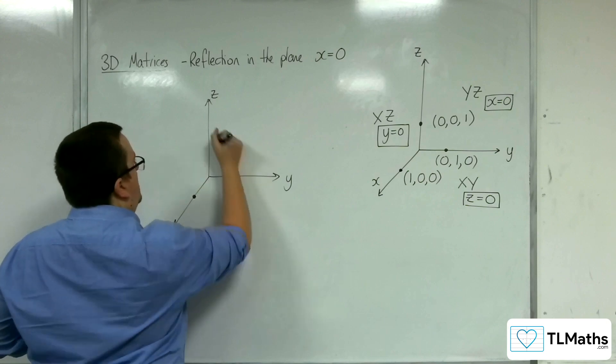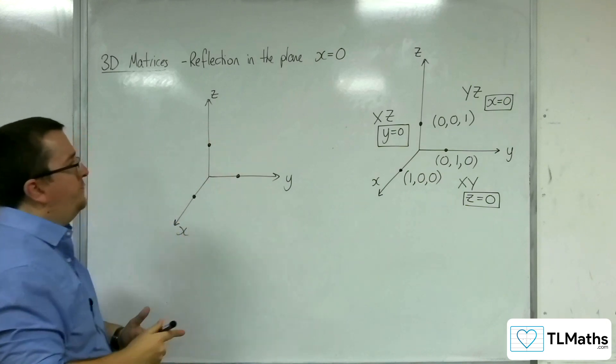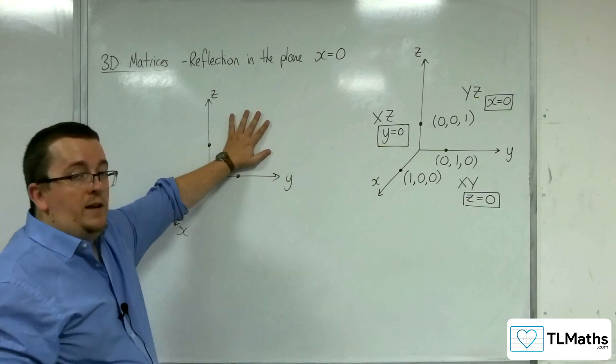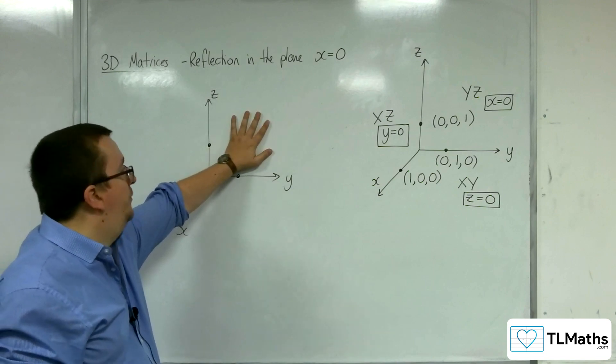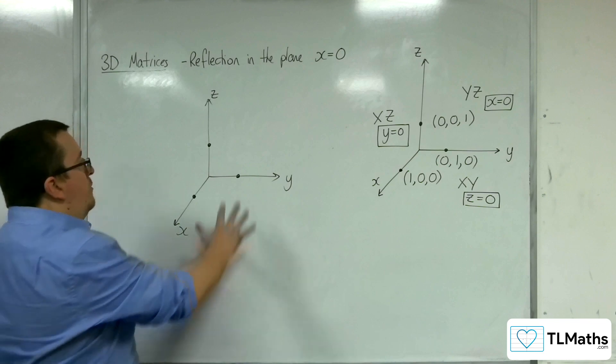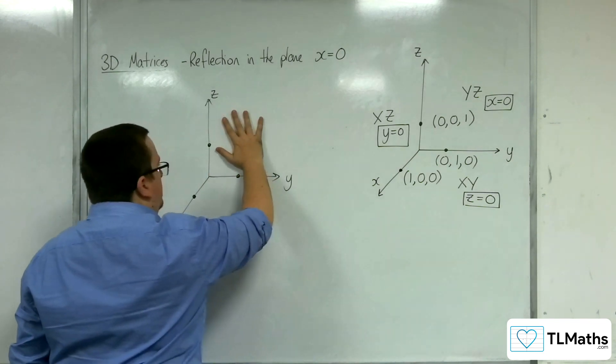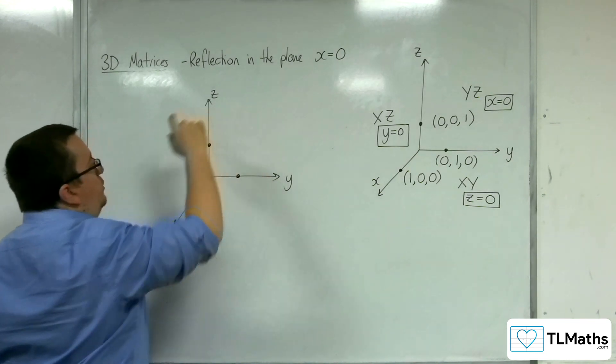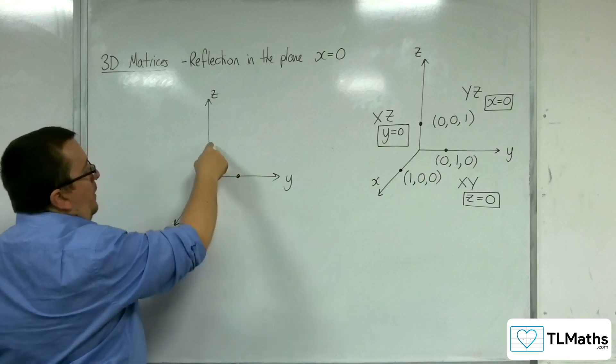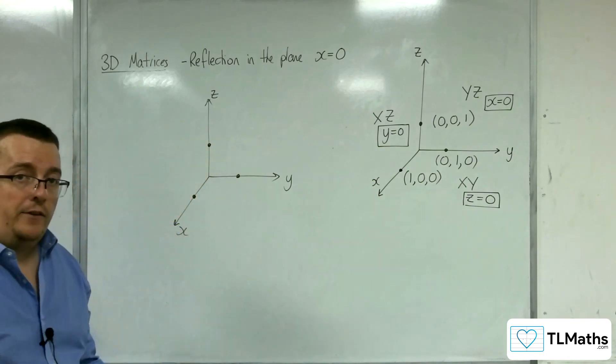So here are my three points. This is the y,z plane, which is the plane x equals 0. So if I am reflecting in this plane, then you can imagine that these points will remain fixed.